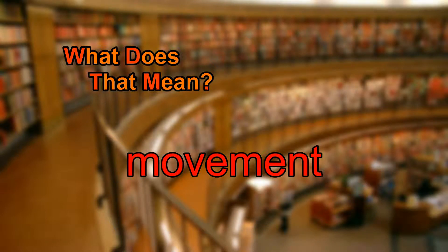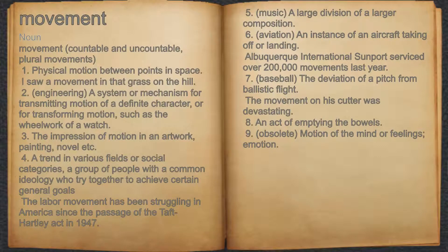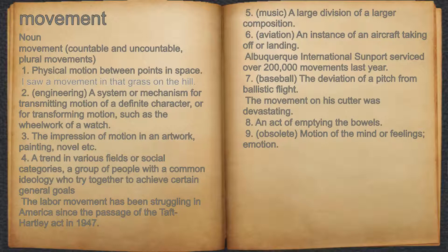What does movement mean? Movement. Noun. 1. Physical motion between points in space. For example, I saw a movement in that grass on the hill.